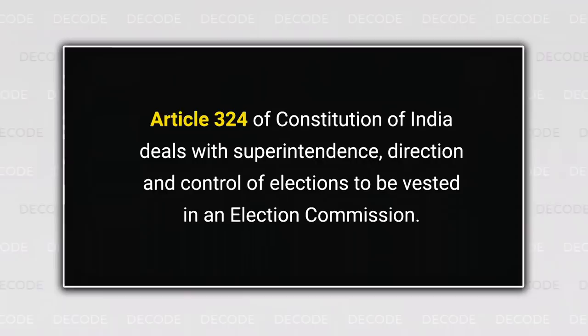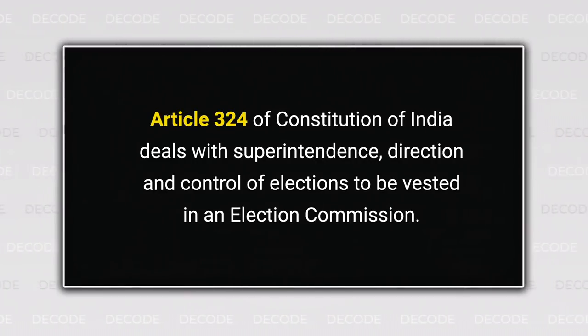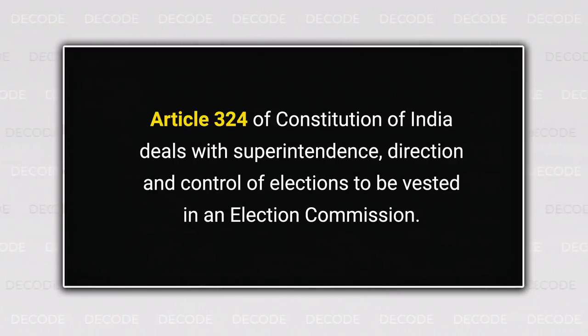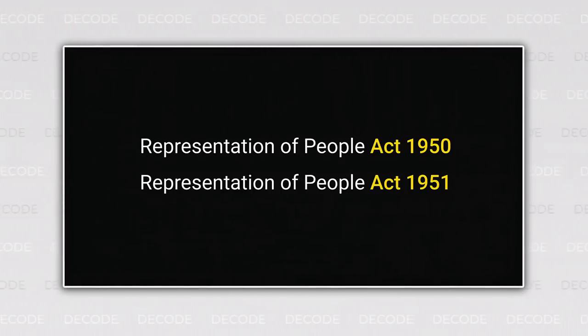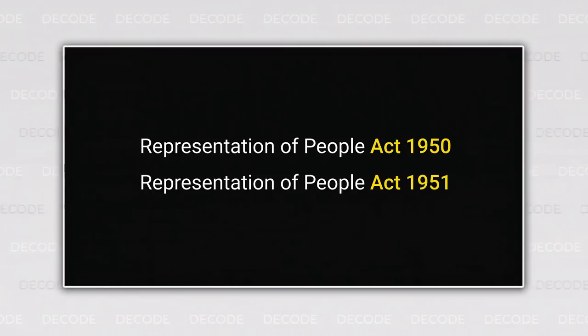Free and fair elections are a must for a thriving democracy. Realizing this, the Constituent Assembly did two things. First, it included Article 324, which facilitated the creation of the Election Commission of India, responsible for advising and administering elections in our country. Second, the Parliament enacted two key electoral laws, the Representation of People Act 1950 and the Representation of People Act 1951, which established the rules regarding elections.